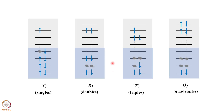In the Hartree-Fock picture, the orbitals up to the blue line are occupied. In a singly excited configuration, you excite one electron from an occupied orbital and put it into a virtual orbital — only one electron excited gives a singly excited configuration. In a doubly excited configuration, you excite two electrons from occupied orbitals to virtual orbitals, and any two electrons can be excited, leading to various doubly excited configurations.